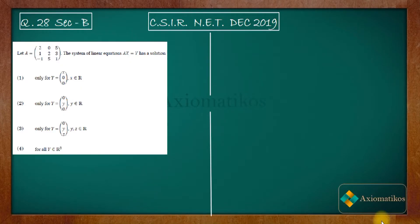Hello everyone, welcome to Axiomatic Course. This video is part of the solution series for CSIR NET December 2019. This is question 28 from Section B. The question states that we are given a 3×3 matrix.